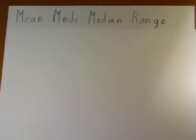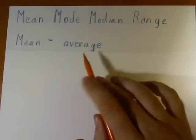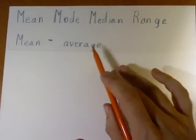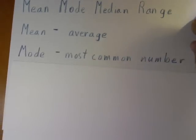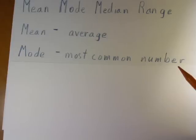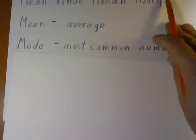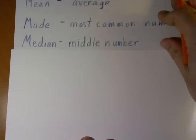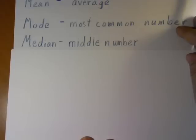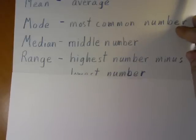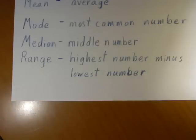Here we're going to look at mean, mode, median, and range for a series of numbers and how to find it. The mean is a fancy mathematical word for finding the average, which we'll discuss more in a minute. The mode is the most common number in a series of numbers or set of data. The median is our middle number — it's the number that divides the top half from the bottom half. And the range is the highest number minus the lowest number, meaning the total range of all the numbers we're talking about.